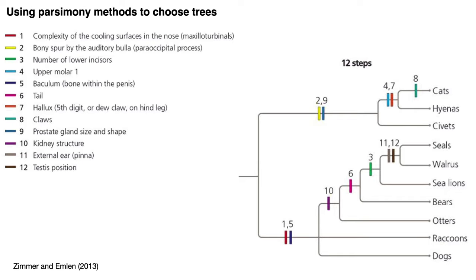If we assumed evolution always took the most complicated route, then phylogeny reconstruction and most of historical biology would be impossible for us to do.